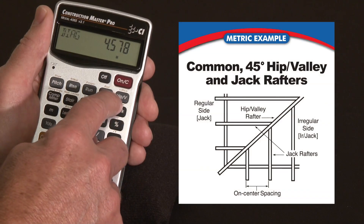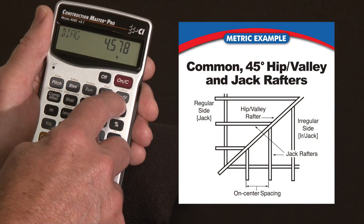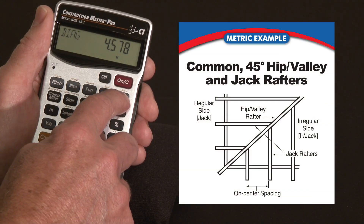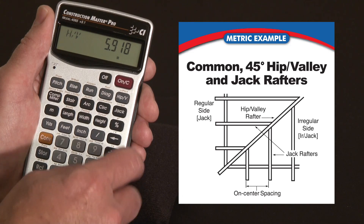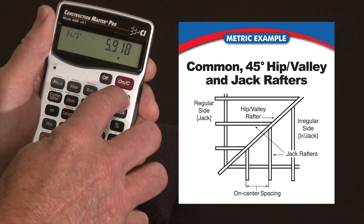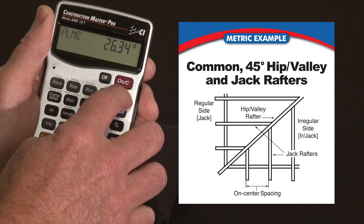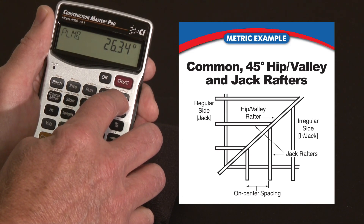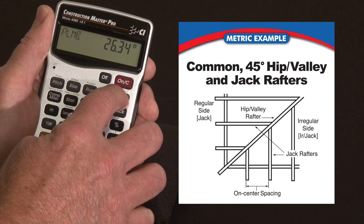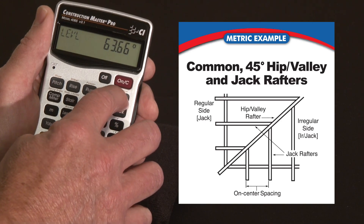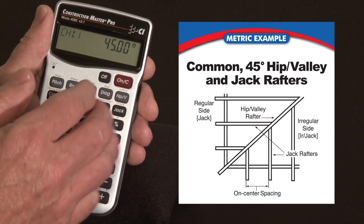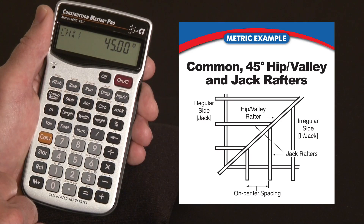Off of that, you also have a hip or valley rafter. If it's a 45 degree coming off, the length of that would be 59.18. You can press that again and get the plumb cut — 26.34 degrees. You can get the level cut and you can also get the cheek cut, and it's 45 degrees because it's a standard hip.